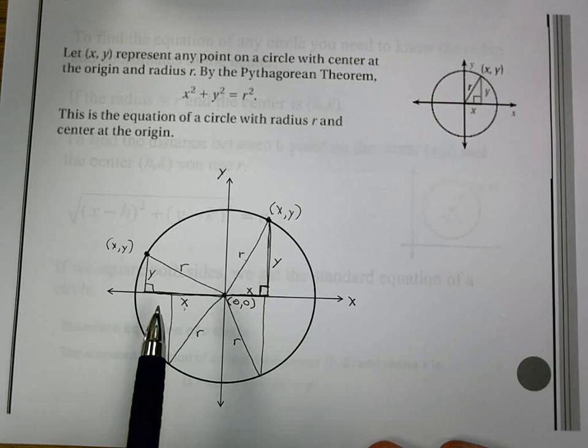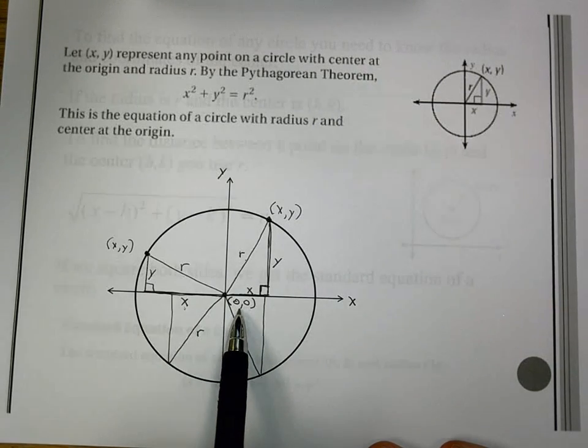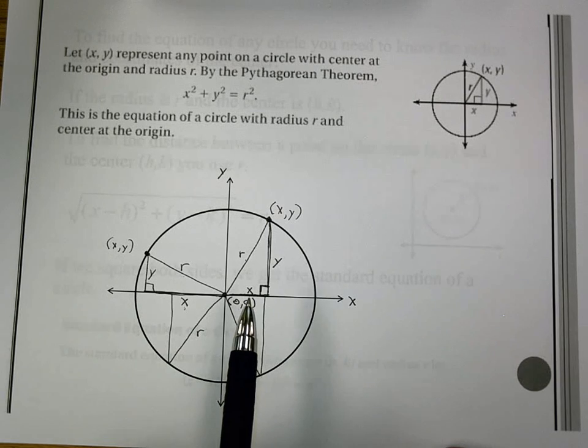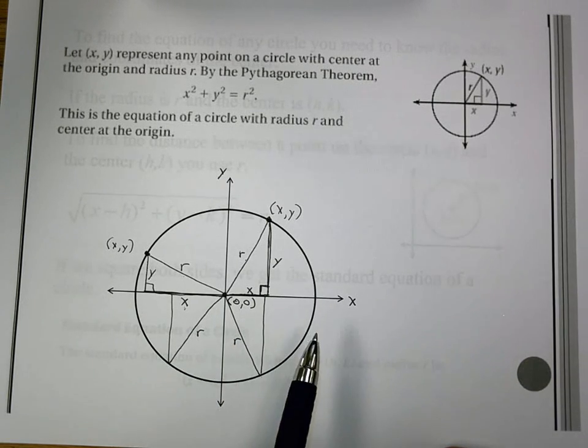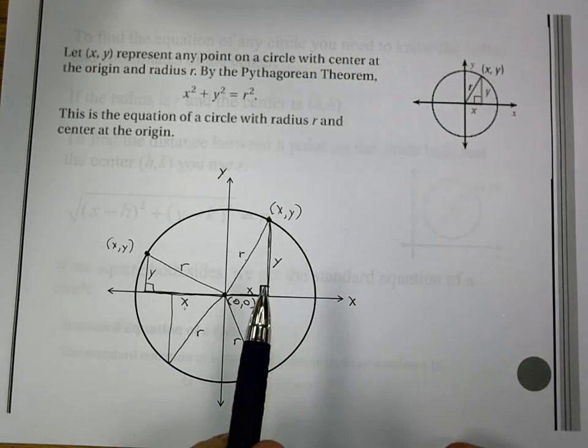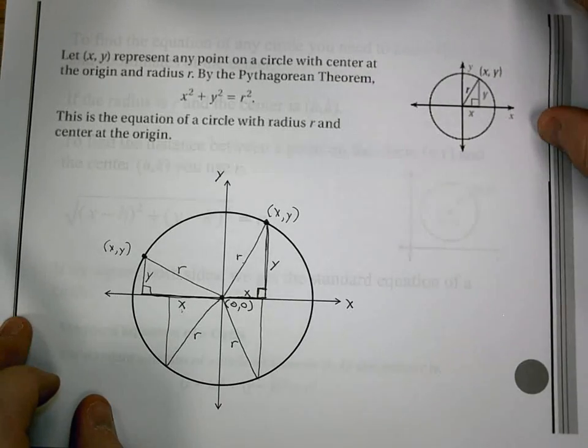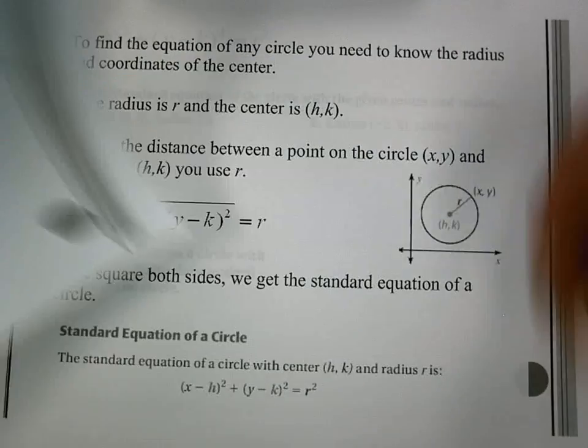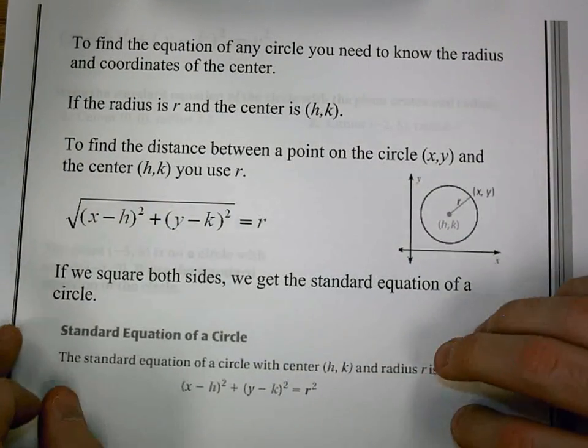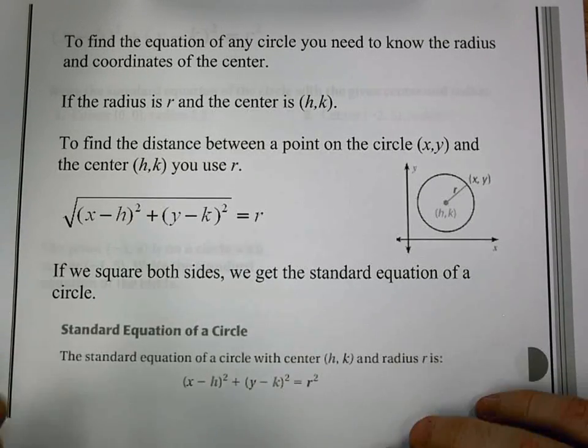Now, before we get too happy about this, we're not always going to be at the origin. It's going to shift. But Pythagorean theorem will be used here. It's that idea behind it to help us with the circle. Now, what also helps us is the foundation we used before we got to Pythagorean theorem.